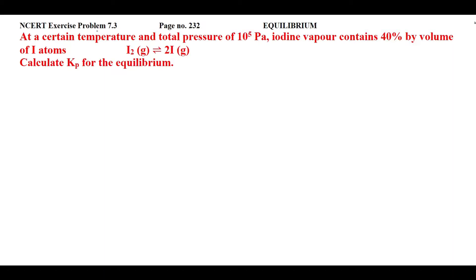Students, this is NCERT exercise problem 7.3 from page number 232 of Equilibrium. At a certain temperature and total pressure of 10⁵ Pascal, iodine vapor contains 40 percent by volume of iodine atoms, and you are having the reaction I₂ giving rise to 2I — that means iodine molecule gives rise to the formation of iodine atoms. Calculate Kp for the equilibrium.